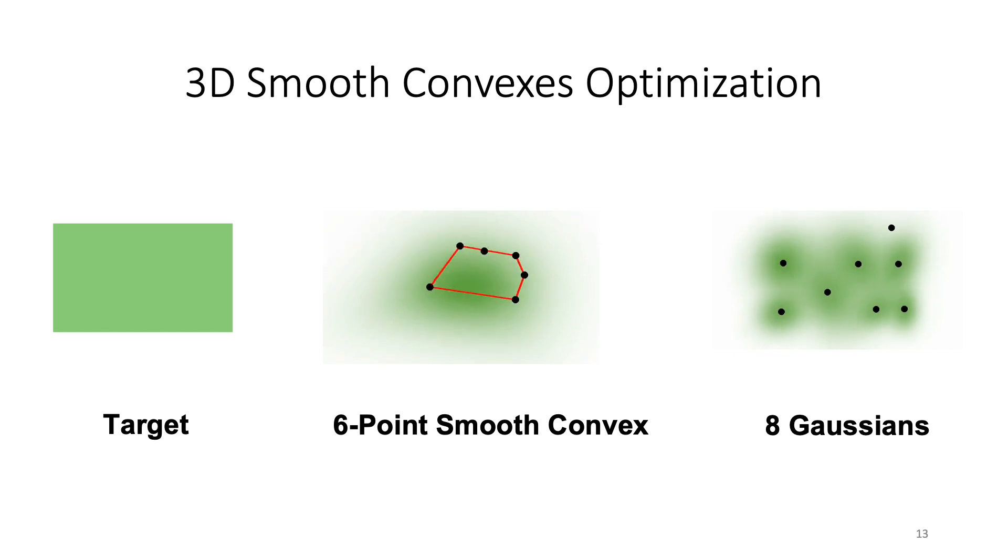Here we show an optimization, just live snapshots of an optimization of a six point smooth convex trying to fit the rectangle, and similarly eight Gaussians that are trying to fit the same rectangle. And you can see how the smooth convex starts basically very transient, but suddenly or gradually starts to actually converge to the very sharp rectangle.